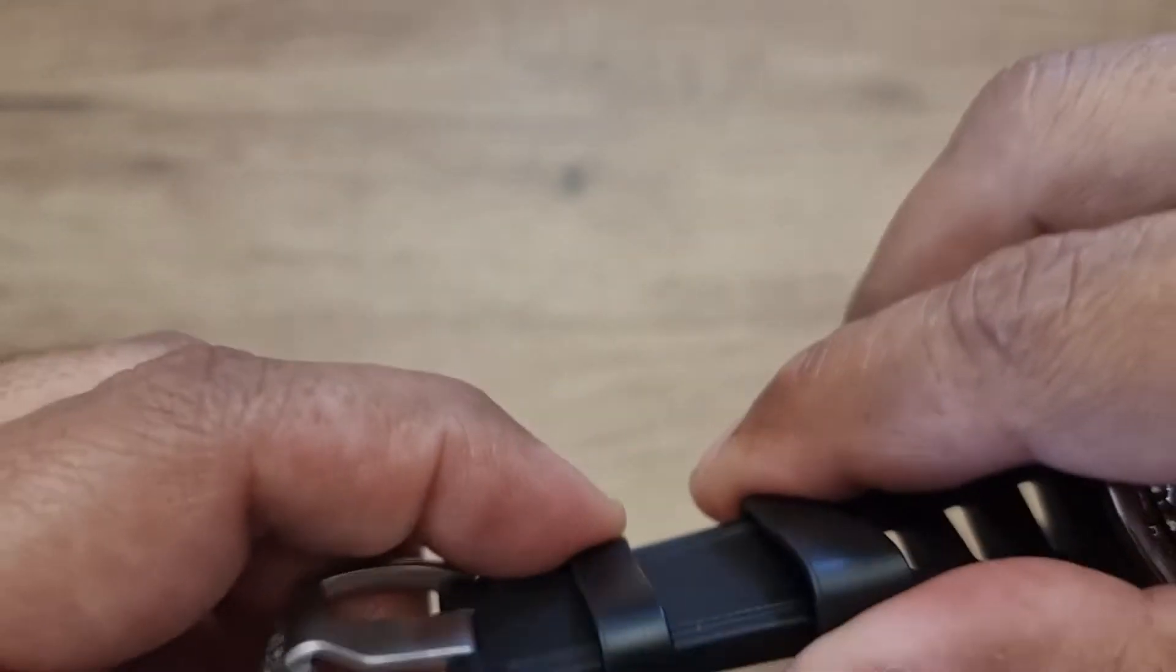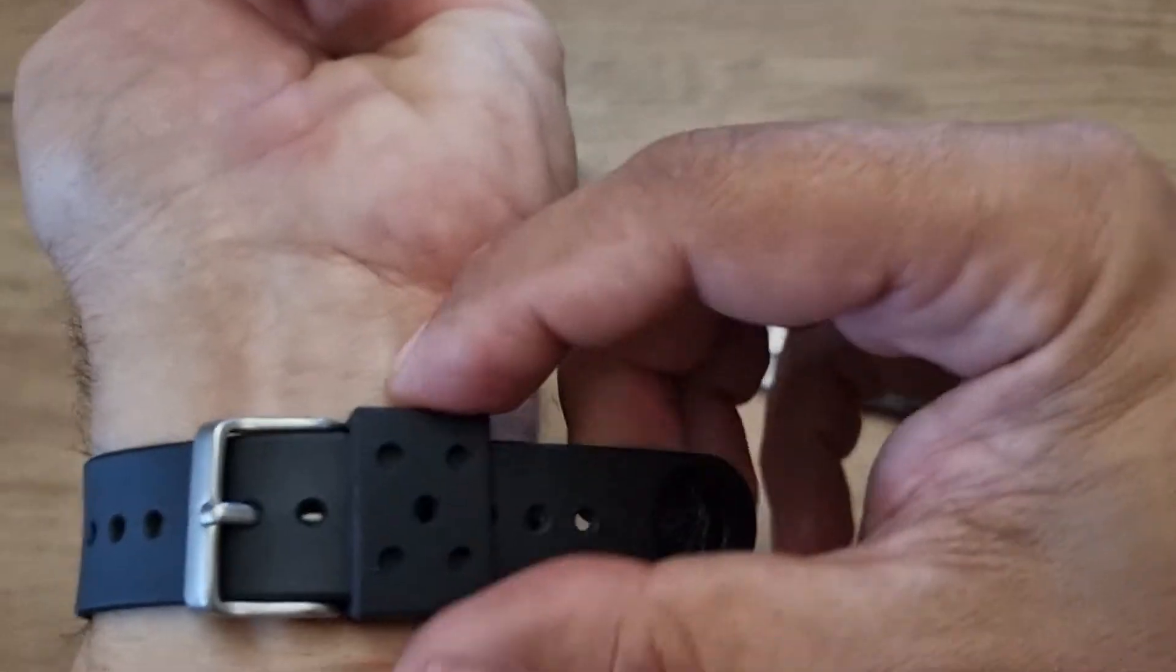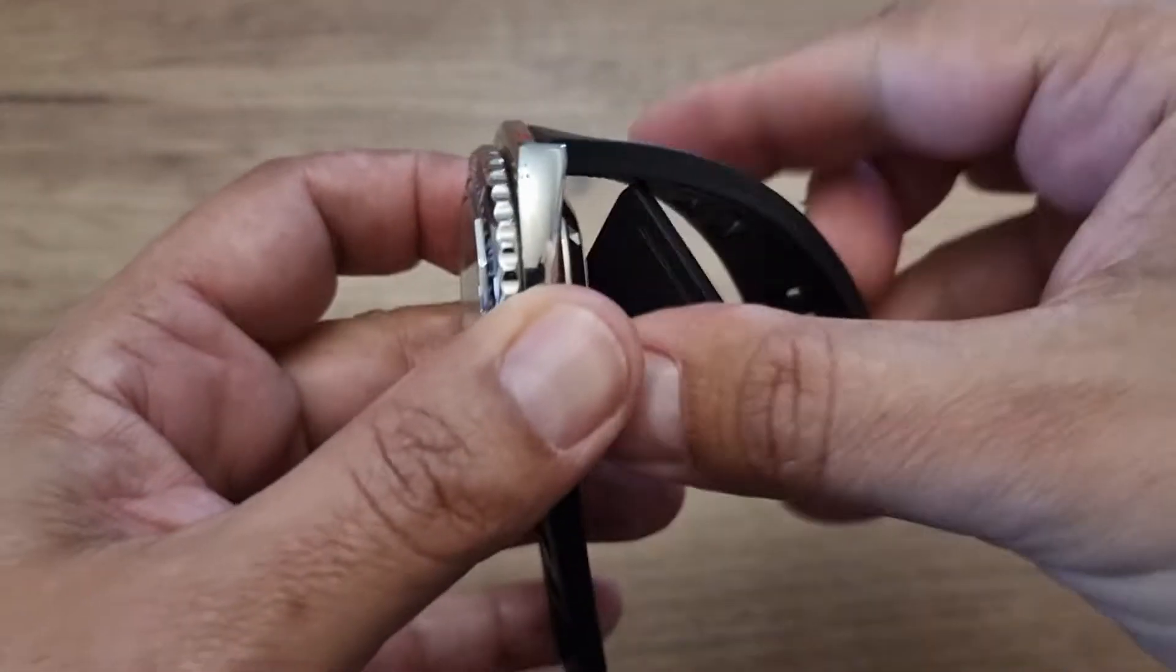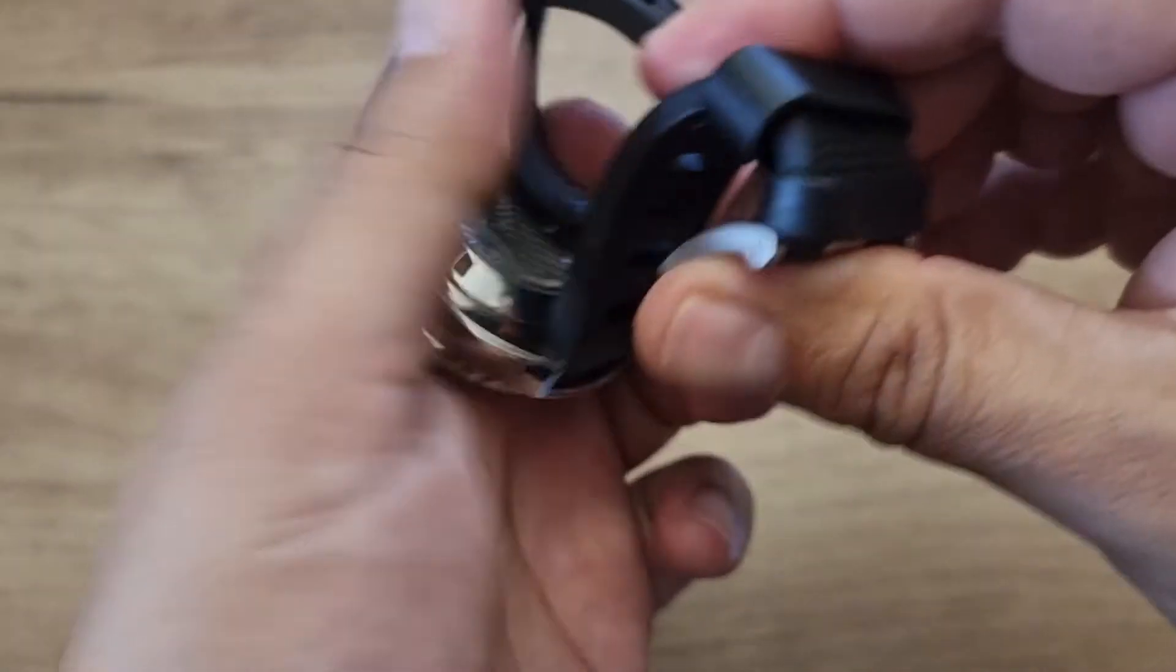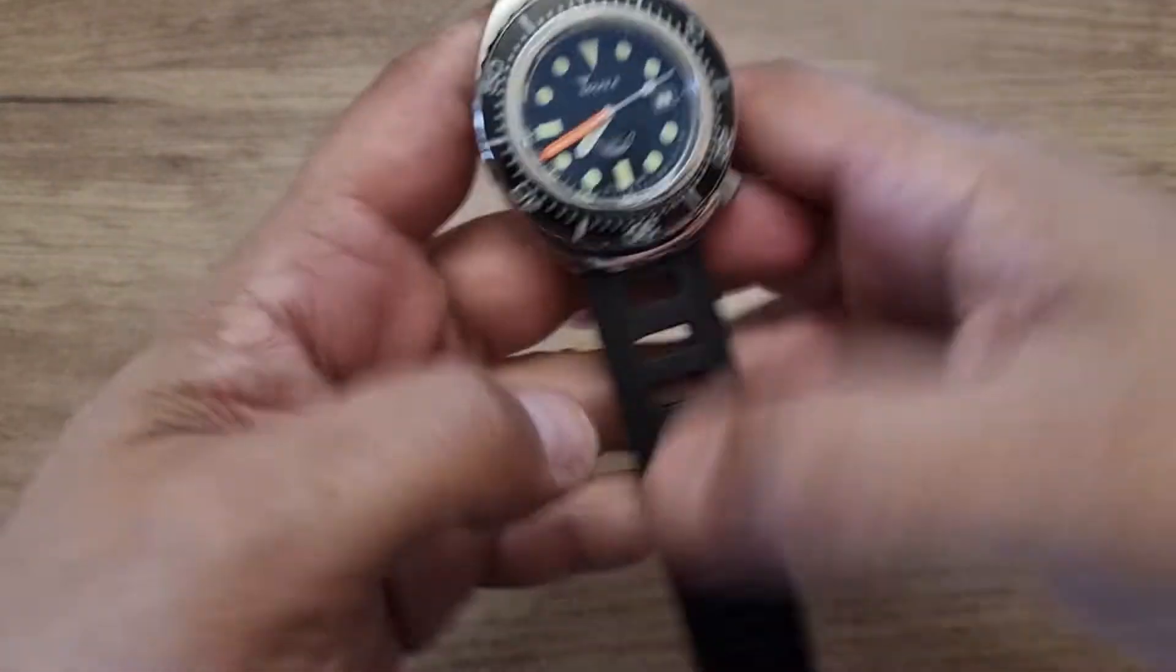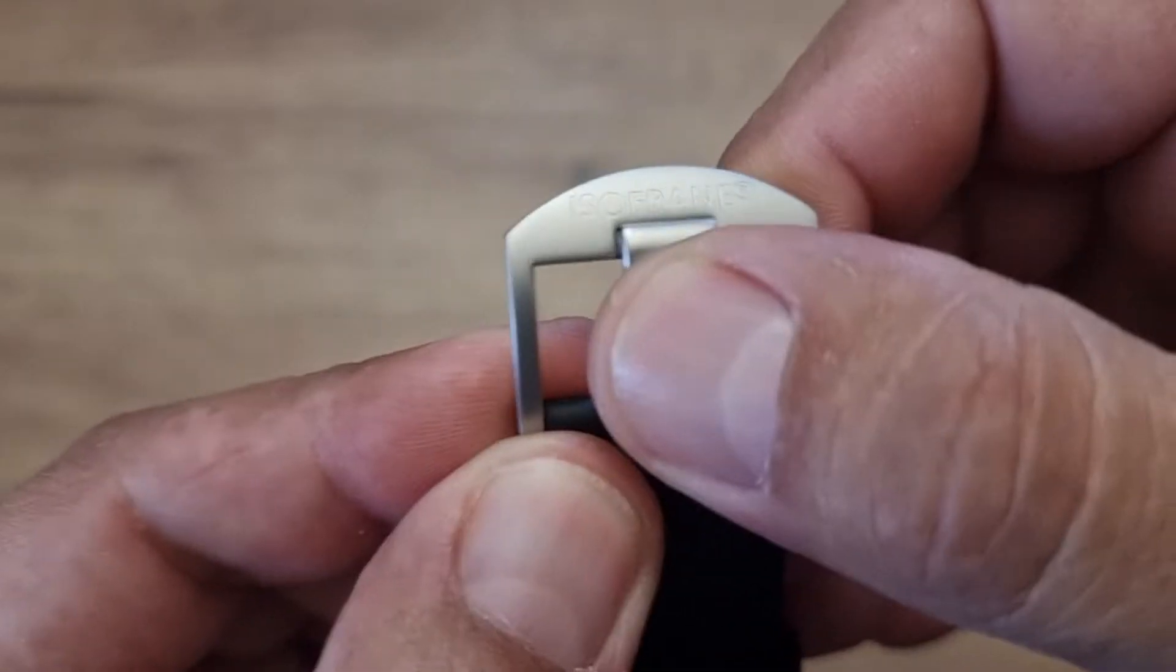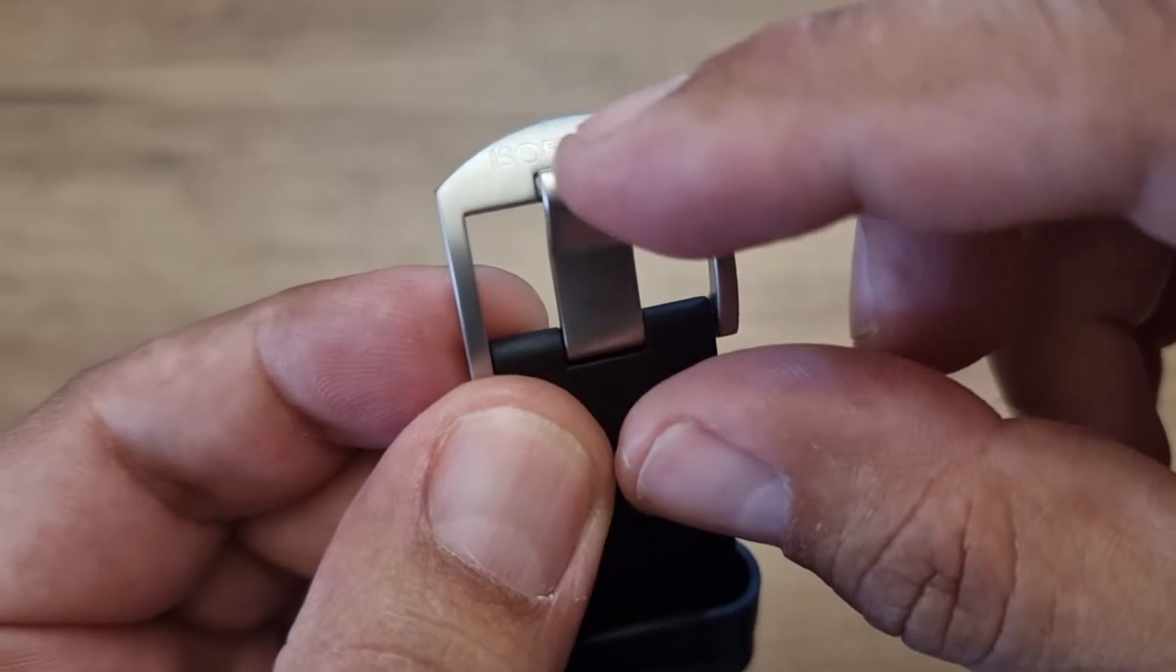It's not a single keeper like you have on a Seiko. The strap is very flexible as you can see, and the quality is excellent. The buckle is a thumbnail type of buckle.